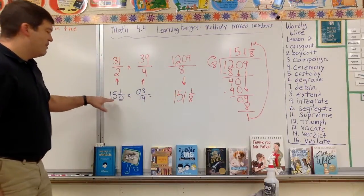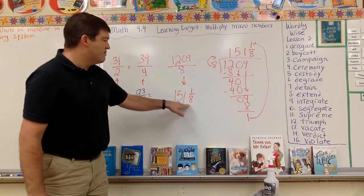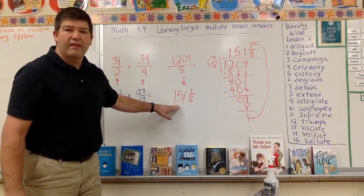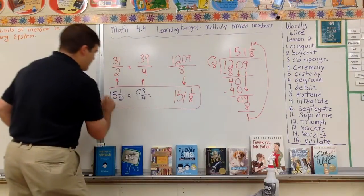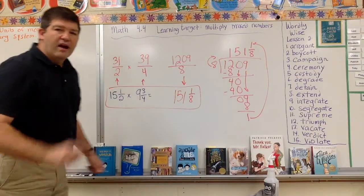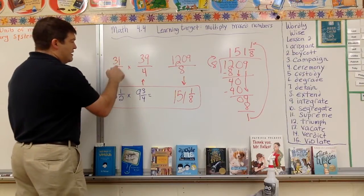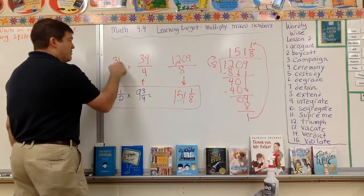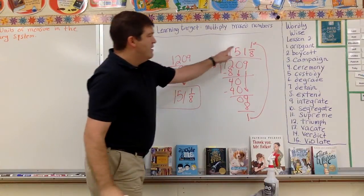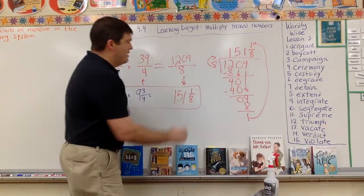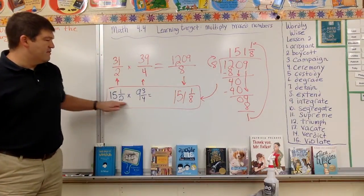So if I'm multiplying 15 and a half times nine and three fourths, my answer is 151 and one eighth. I just can't do this like this. I just can't go across like that. I have to convert it to improper. I have to take it to improper, take it to improper. Then I can go across. Once I do that, then I do the division, and then I'm able to have my answer that answers this question.